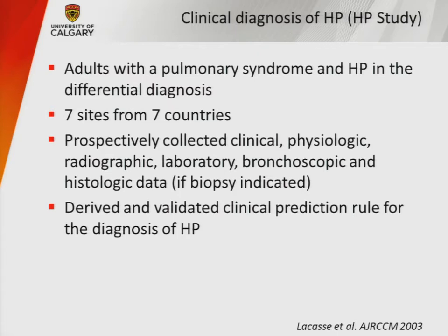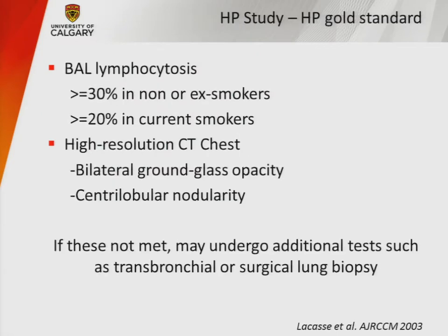They derived and validated a clinical prediction rule for HP diagnosis. The gold standard was a combination of BAL lymphocytosis — greater than 30% in non- or ex-smokers, or greater than or equal to 20% in current smokers — and on HRCT, bilateral ground glass opacity and centrilobular nodularity, with exclusion of other causes.